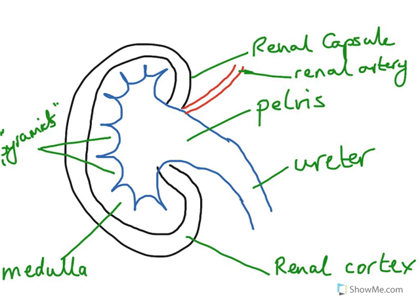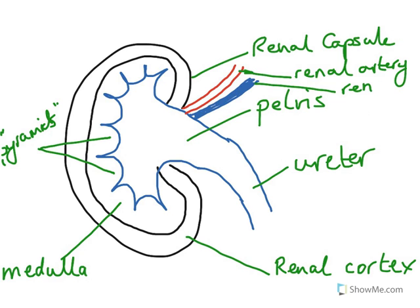The blood that enters the kidney via the renal artery is going to be quite different from the blood that then exits — and the blood that exits is going to be leaving in a vein, which of course we call the renal vein. Just one last thing we want to show is the position of the functional unit, or subunit, of the kidney, which is called the nephron.